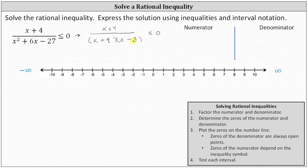Step two: we now determine the zeros of the numerator and denominator. For the numerator, x plus four is zero when x equals negative four. For the denominator, the quantity x plus nine times the quantity x minus three is zero when x equals negative nine or x equals positive three.